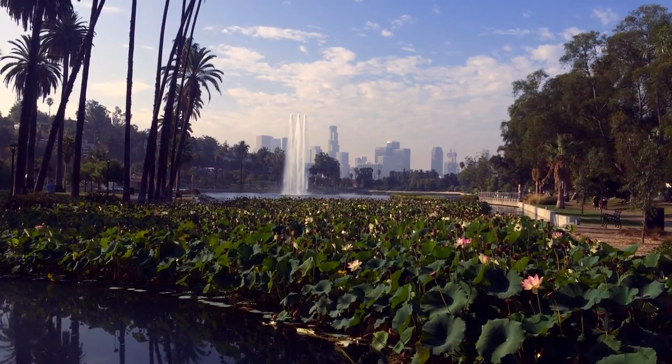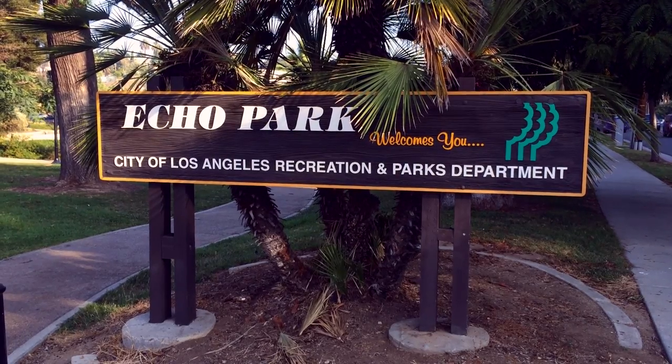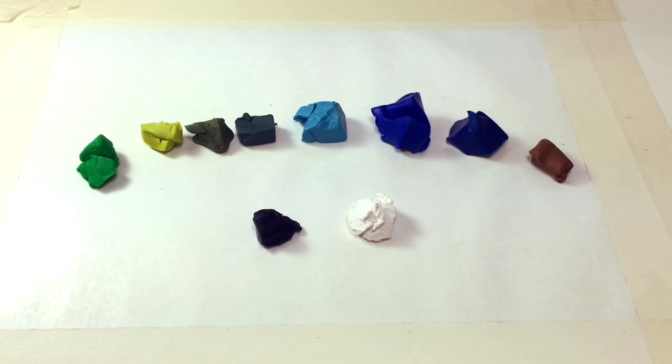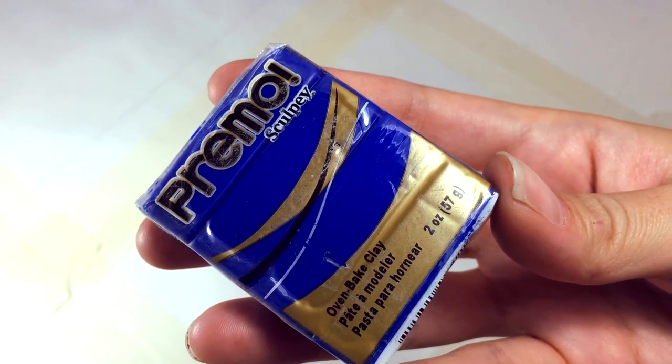Today I'm going to be making art inspired by Echo Park Lake, which is in the neighborhood of Echo Park in Los Angeles, California. And I'm going to be using polymer clay to make a coaster, like Sculpey or Fimo or anything like that.